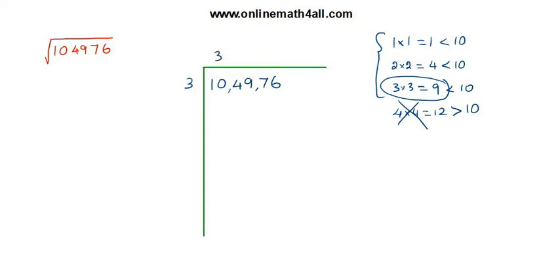Now we subtract nine from ten and get one. Next, we have to multiply the quotient digit three by two, and we get six. That six is written in the next divisor position. Once we write the result here, we are ready for the next step.